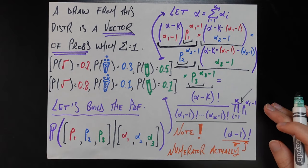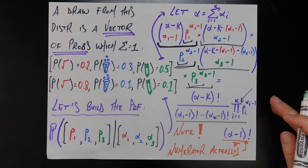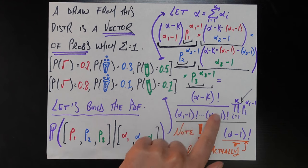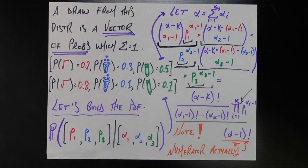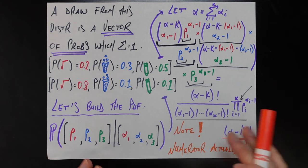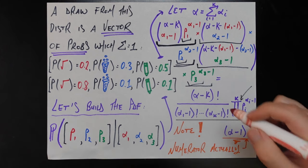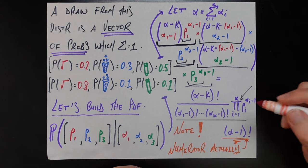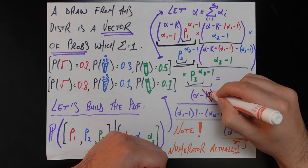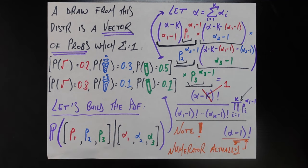That constructs the probability density function of the Dirichlet distribution from the ground up — with one important note. This numerator is not actually alpha minus k factorial in the actual probability density function; it is actually alpha minus 1 factorial. So I'm going to cross that out, because it's not the correct form. The only adjustment we need to make is replacing alpha minus k with alpha minus 1 in that factorial.